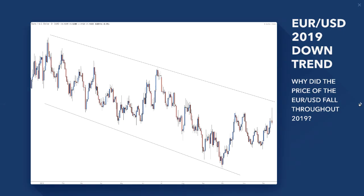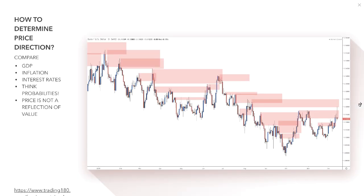So let's get into it. Euro dollar 2019 downtrend — could this have been predicted? Of course it could. I don't even like using the word predictions because what I tend to do is look at the balance of probabilities of one thing happening over another. I can be wrong or right, but when I'm right we try to make as much as we can, and when we're wrong we're risk managers. The question is: why did the price of euro dollar fall throughout 2019? All this year — in fact for the past two and a half years — all I've been doing is shorting the euro dollar, ignoring demand zones.